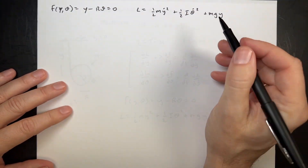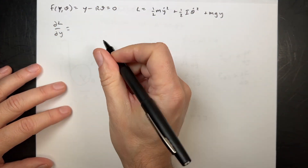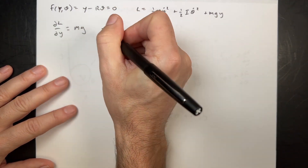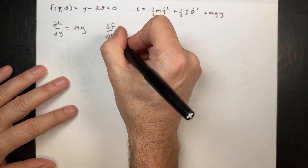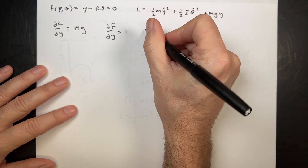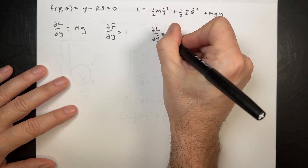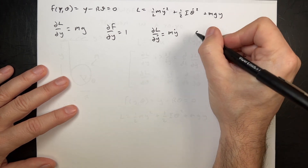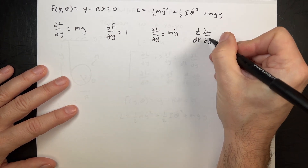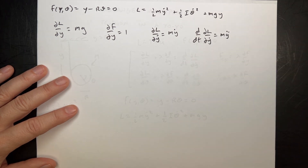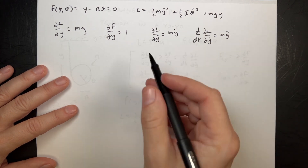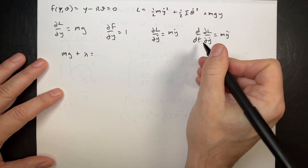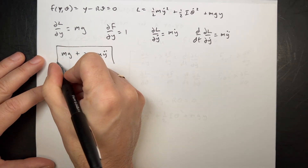For the first modified Euler-Lagrange equation, the partial of L with respect to Y is M·G. The partial of F with respect to Y is 1. The partial of L with respect to Y-dot is M·Y-dot, and its time derivative is M·Y-double-dot. Putting it all together: M·G plus lambda equals M·Y-double-dot.